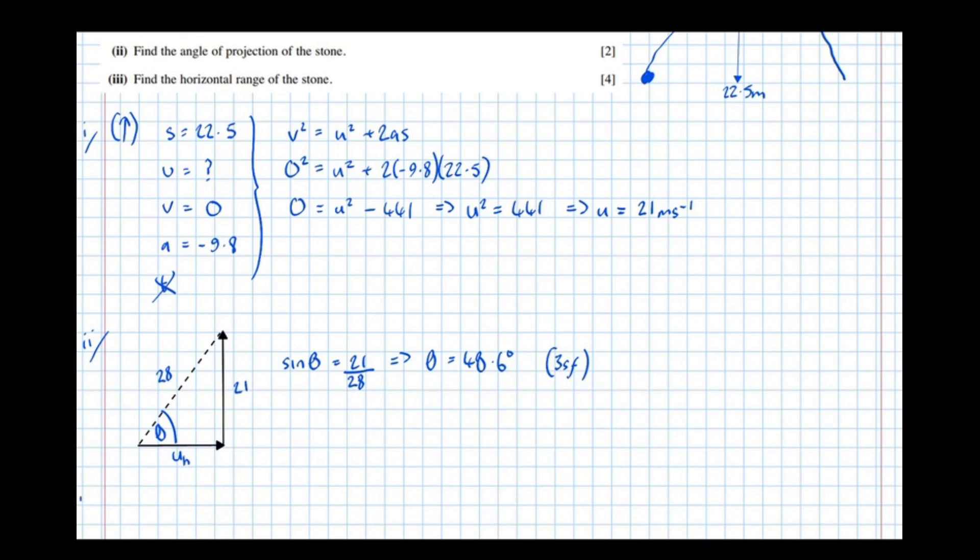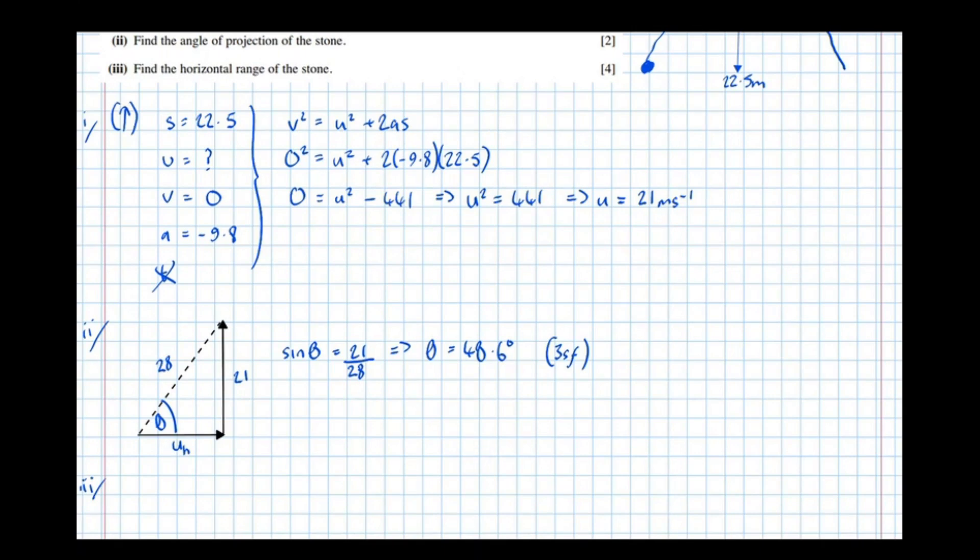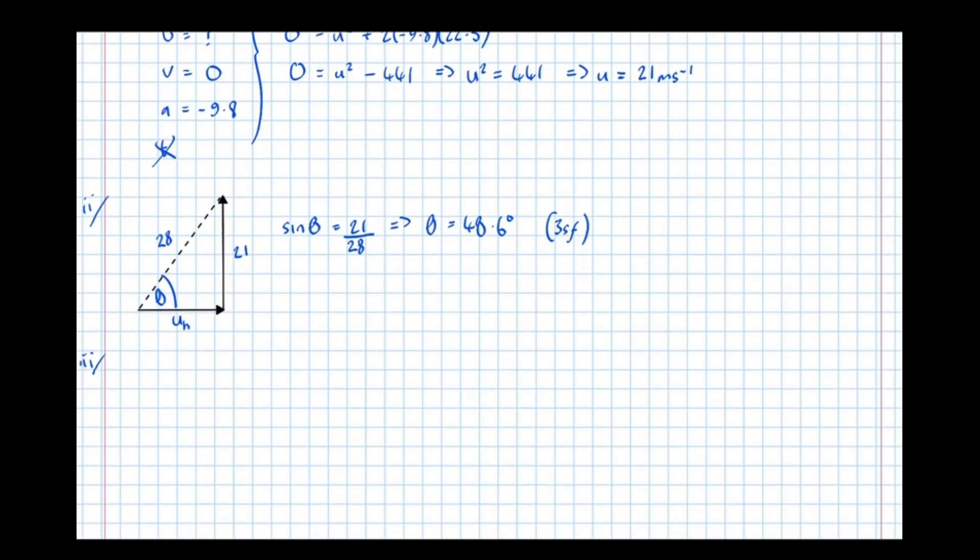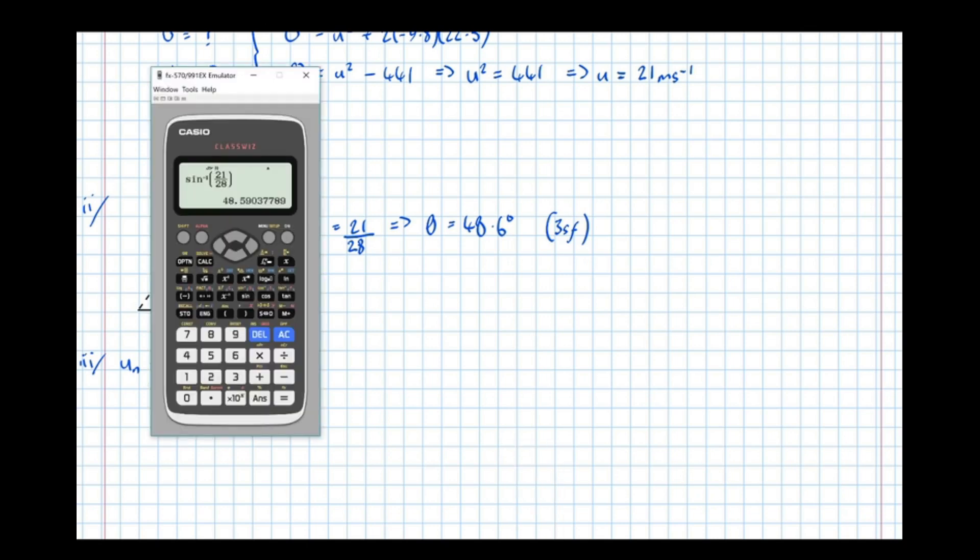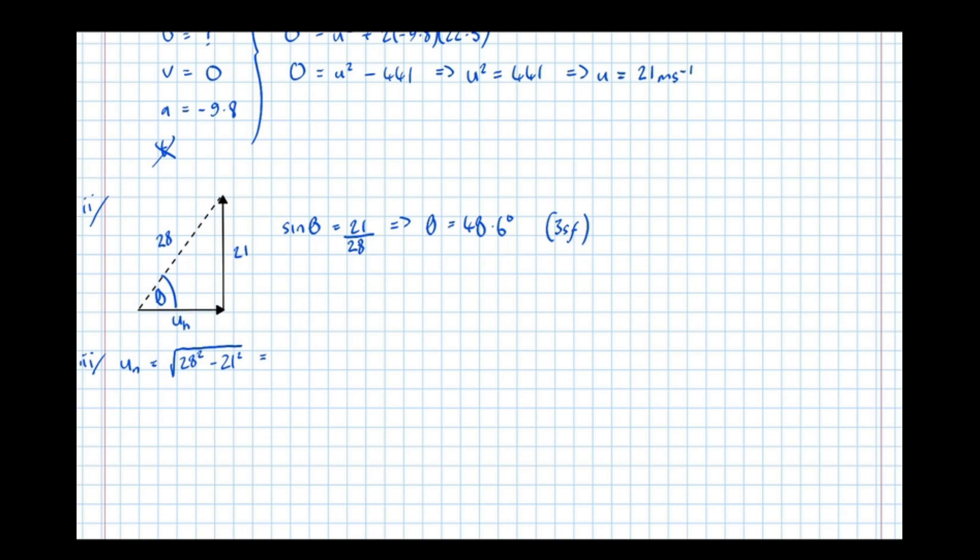So basic GCSE trigonometry, we get 48.6 degrees to three significant figures. And find the horizontal range of the stone. Okay, so part three, the horizontal range. Well, first of all, it helps to find the initial velocity in the horizontal direction. So looking at this triangle we've drawn here, we can see that this side here is the horizontal initial velocity. Well, we can simply just use Pythagoras. So the square root of 28 squared take 21 squared equals 7 root 7.